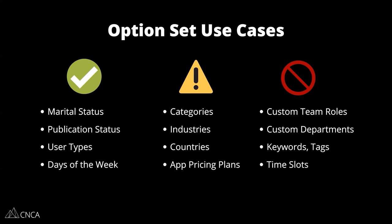Looking at the use cases where we want to be careful — this middle section — categories, industries, countries, app pricing plans. These are all good use cases for option sets, but only if the list of choices is relatively small. My rule of thumb is a couple dozen. Anything more than that gets really cumbersome in the editor. If you're going to have hundreds of categories, go with a data type instead. It's much easier to work with because you have the app data view in a table format. You can't see option set attributes in a table format, and data types are also better for bulk editing.